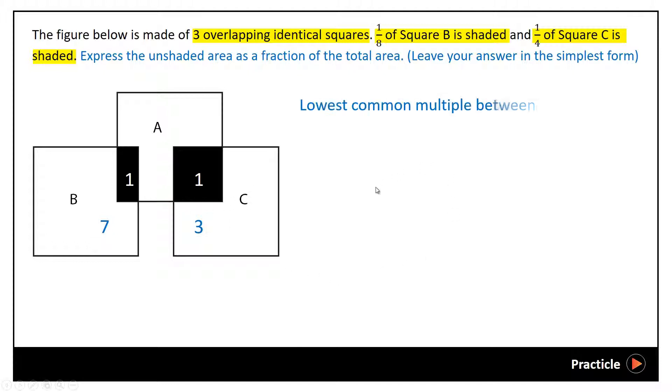In this case, we need to find the lowest common multiple between 8 and 4, which is 8. And we convert the 4 parts of square C into 8 units. So 1 times 2, I have 2 parts that are shaded. 3 times 2, I will have 6 parts that are unshaded.